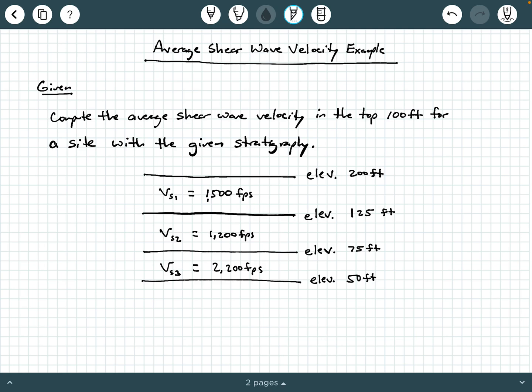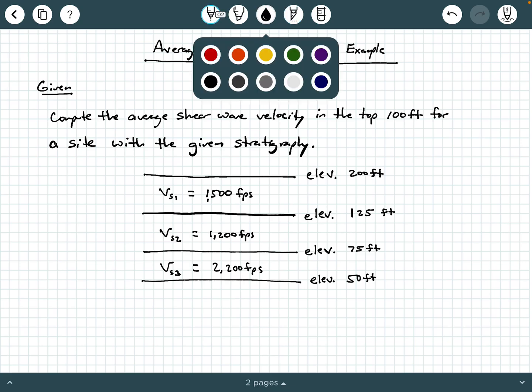The second layer goes from elevation 125 down to 75 feet, and it has a shear wave velocity of 1200 feet per second. And then the third layer goes from 75 feet down to 50 feet, and has a shear wave velocity of 2200 feet per second.